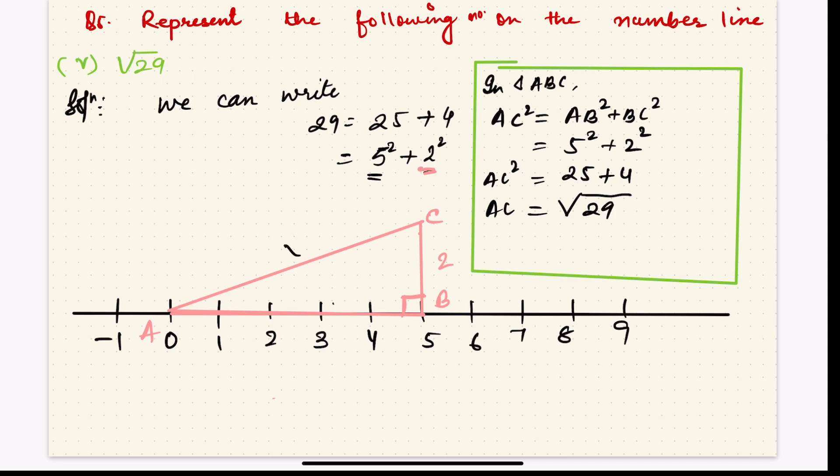So how much you got AC? AC you got to be root over 29. Now, since you got AC square is equal to 29, you take A as the pin of your compass and C as the pencil side of your compass, and draw arc.